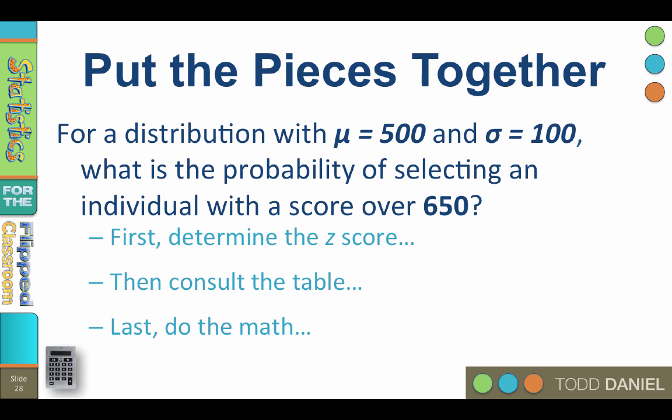Let's put the pieces together and answer the question of probability from beginning to end. So for a distribution with a mean of 500 and a standard deviation of 100, what is the probability of randomly selecting an individual with a score above 650?